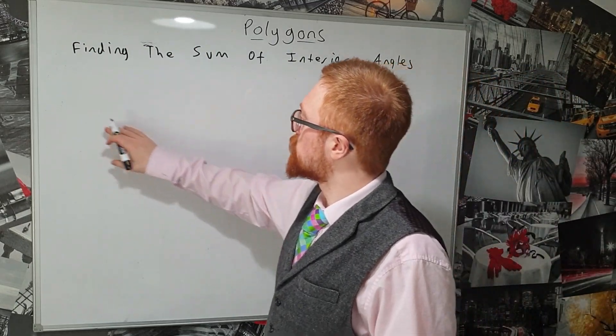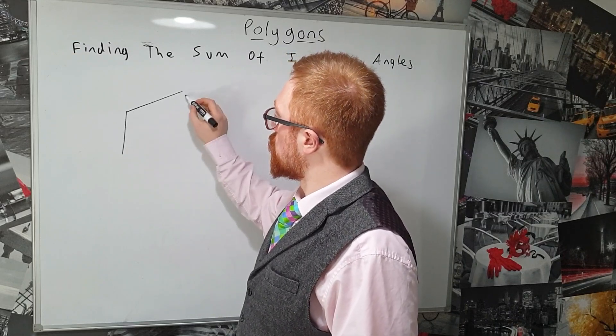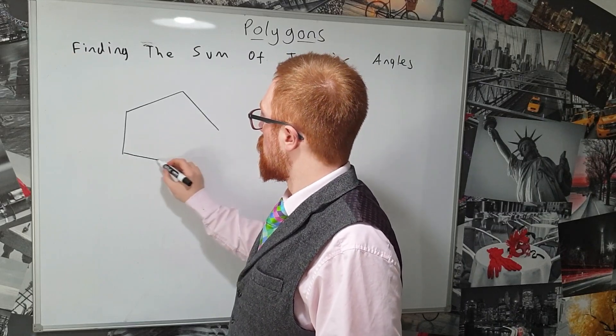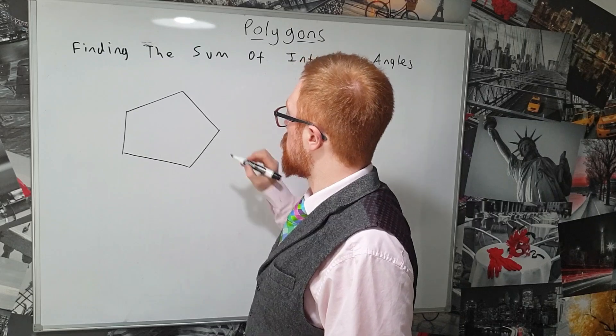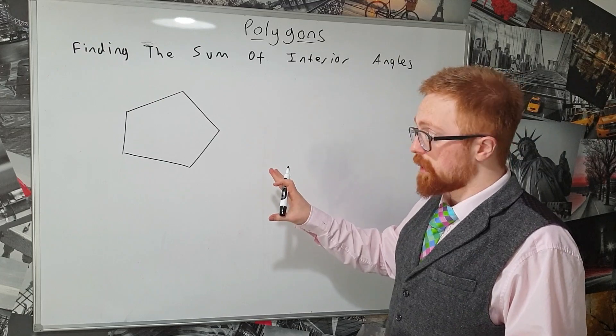Now interior angles are slightly trickier than exterior angles. Where exterior angles always add up to 360 degrees, the sum of the interior angles changes depending on how many sides your polygon has.